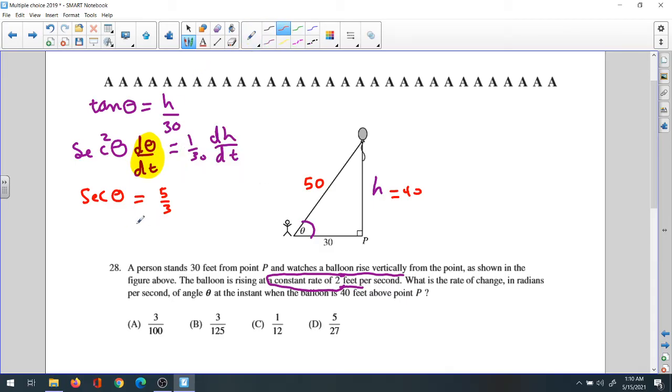Let's plug it all in here. Secant squared will be 5 over 3 squared, times d-theta with respect to time, equals 1 over 30. The change of the height is given by 2. The balloon is rising at a constant rate of 2, so dh with respect to t is 2.